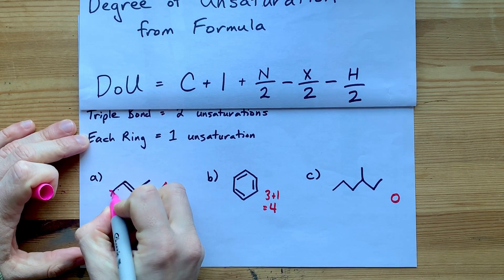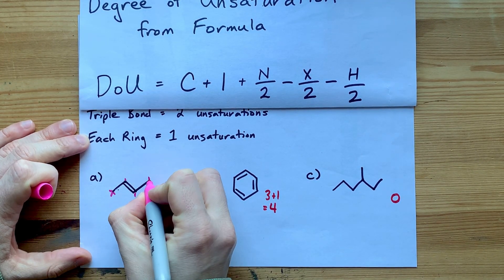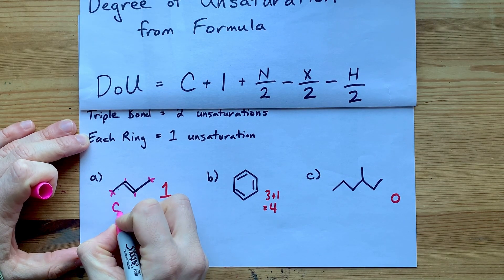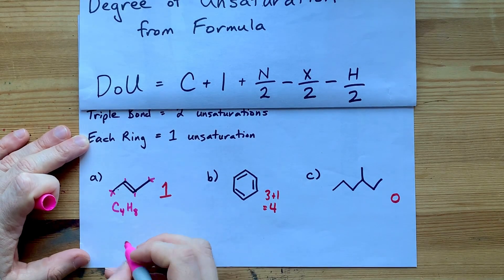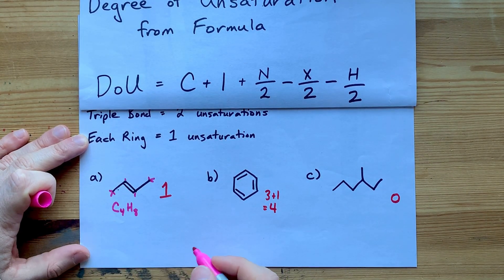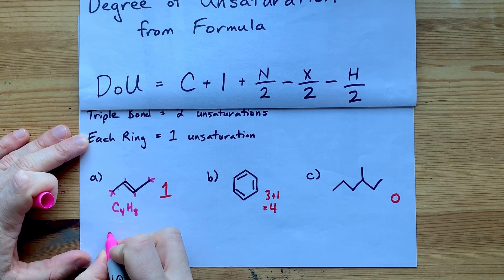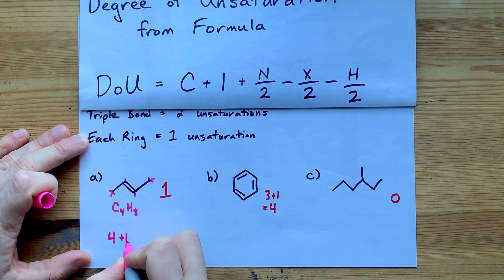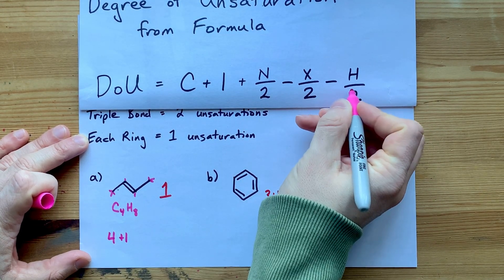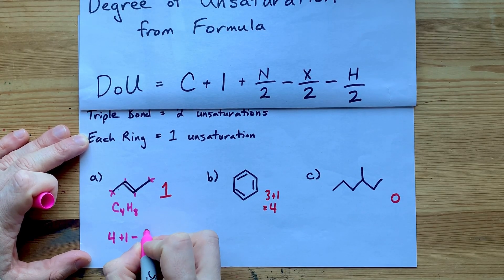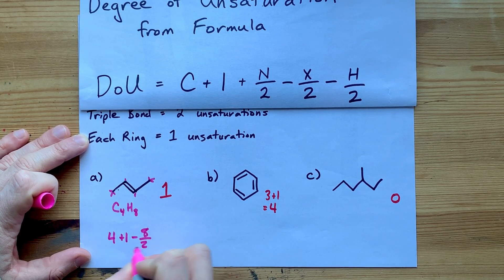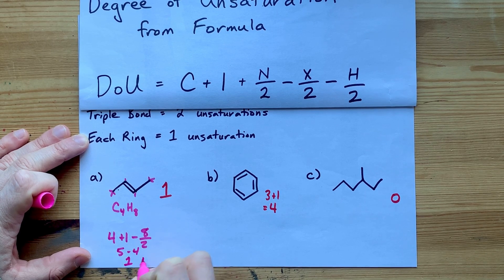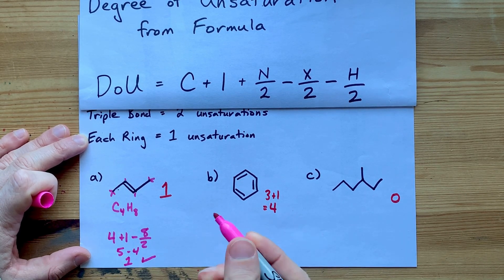This molecule here, I'm just going to make sure I'm getting all my hydrogens. This looks to me like it's C4H8. So, my degree of unsaturation according to the formula is four carbons plus one. Ignore, ignore, hydrogens is minus eight over two. So, I have five minus four, which is one. Hey, we were right. Of course we were.